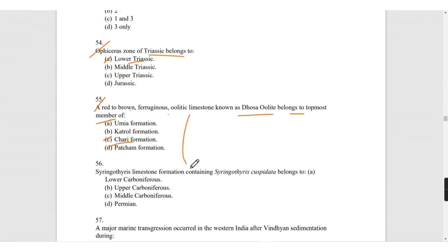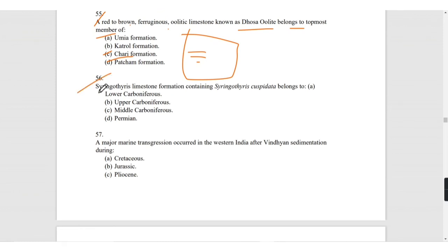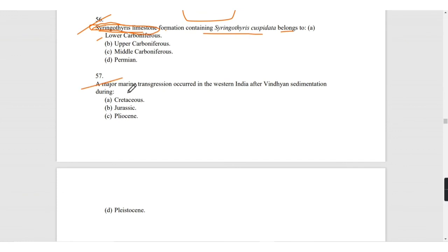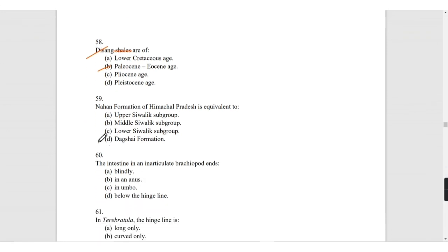Syringothyris limestone formation containing Syringothyris cuspidata belongs to the lower Carboniferous. You must have read about these ages in your practical classes. A major marine transgression occurred in western India after Vindhyan sedimentation during the Jurassic period. Disang shales are of Paleocene to Eocene age. Nahan formation of Himachal Pradesh is equivalent to the lower Siwalik group subgroup.